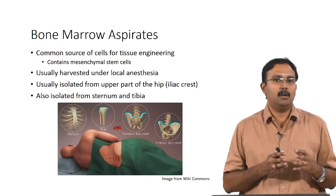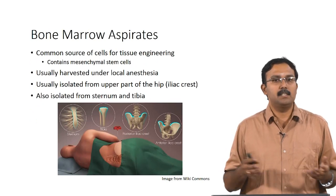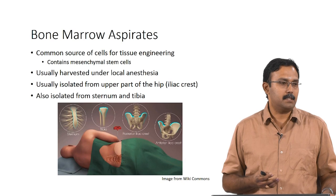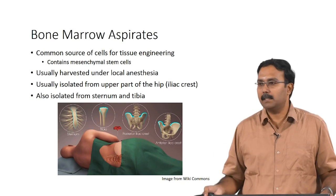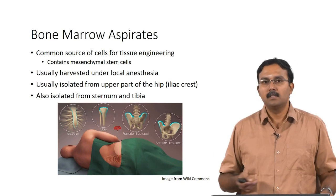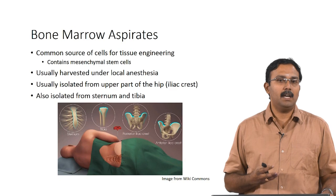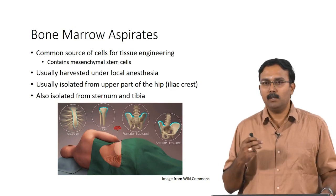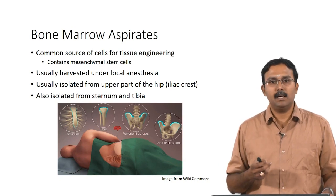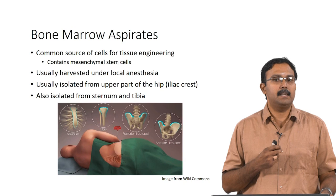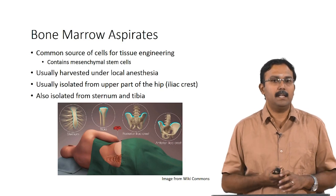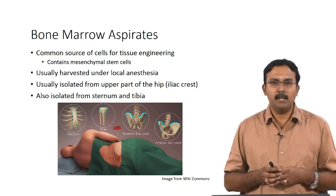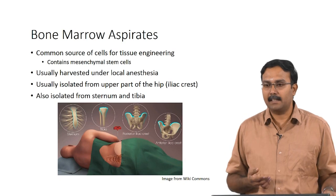One of the most common sources for cells in tissue engineering is bone marrow aspirates, because these contain the mesenchymal stem cells. These are usually harvested under local anaesthesia, and the bone marrow aspirates are taken from the upper part of the hip, which is the iliac crest.